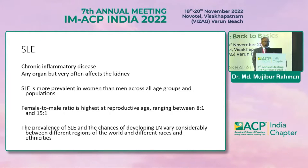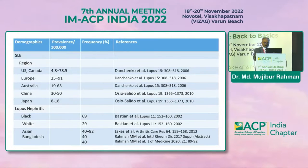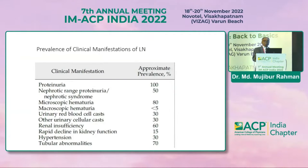The prevalence of SLE and the chances of developing lupus nephritis varies considerably in different regions of the world. In the Bangladesh setting, it is 40% — 40% of lupus patients usually develop lupus nephritis — but it varies from 30 to 70%, or in some areas up to 80%. These are the clinical manifestations of lupus nephritis.